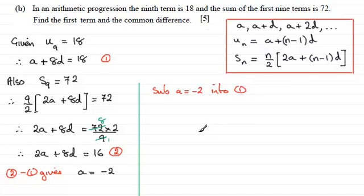If I do that, we've got minus 2 plus 8D equals 18. If I add 2 to both sides, I've got 8D equals 20. Divide both sides by 8 and you've got D equals 20 divided by 8.